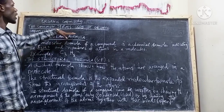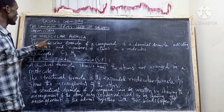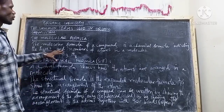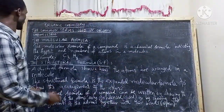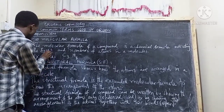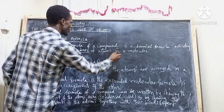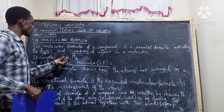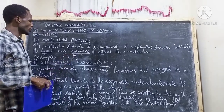So we call them the common terms used in organic chemistry. First, we have the molecular formula. The molecular formula of a compound is a chemical formula indicating the type and the numbers of atoms in the molecule — that is, how many atoms are there and what kind of atoms you are dealing with.